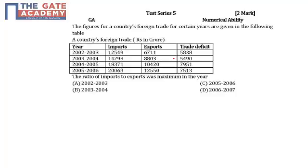What we are supposed to find is the year in which the ratio of imports to exports was maximum. So if I is the import value and E is the exports value, we need to find I divided by E, and determine which particular year gives the maximum ratio.